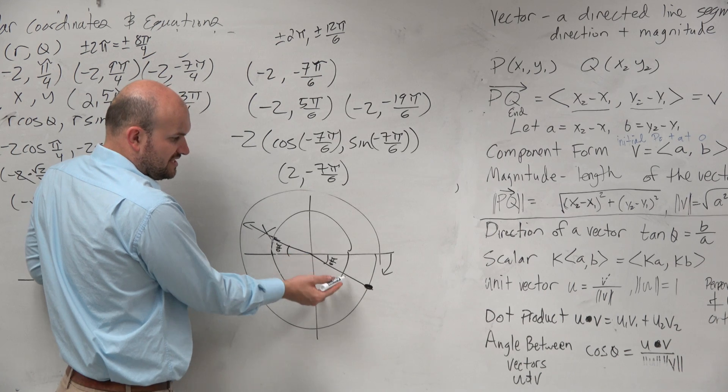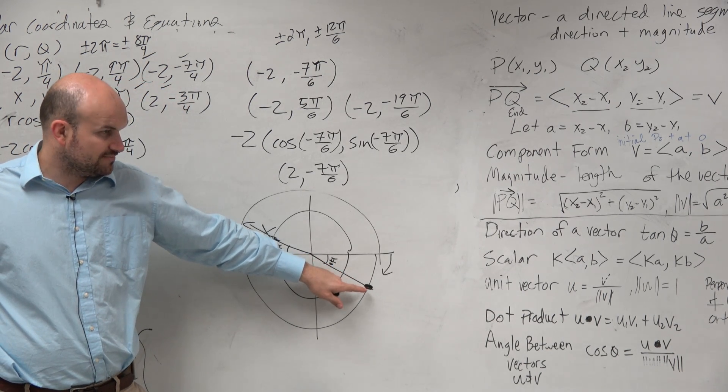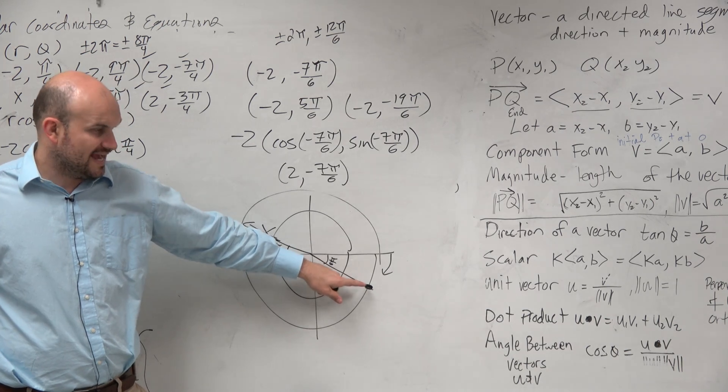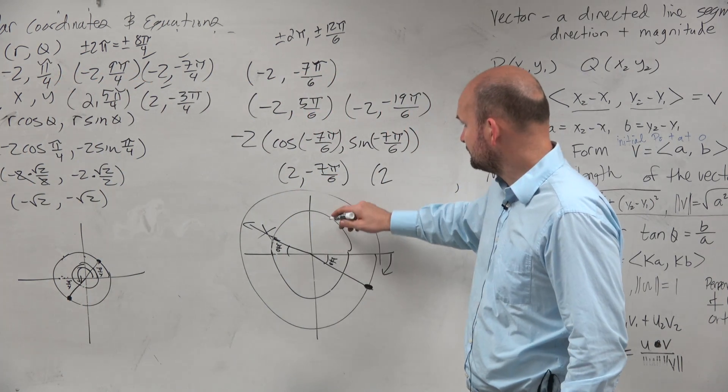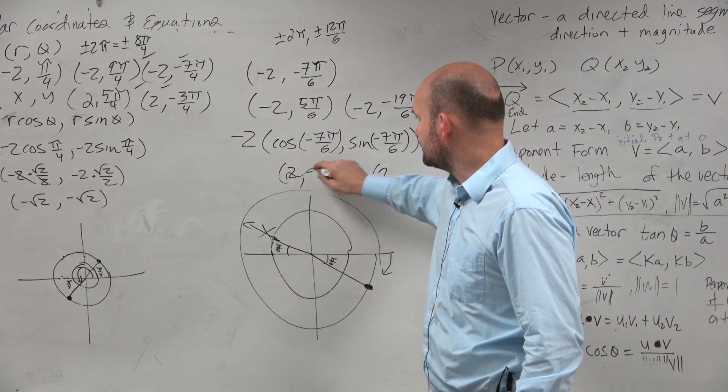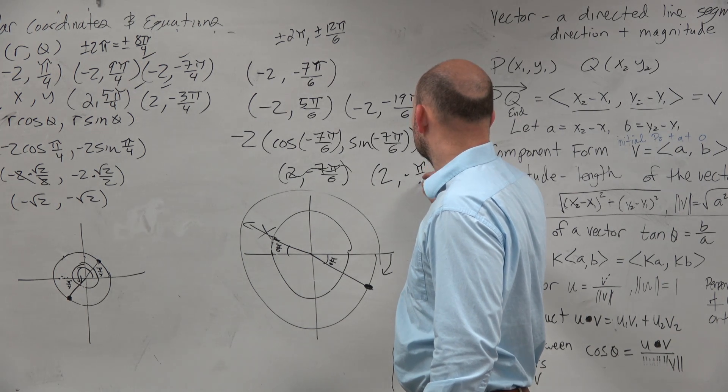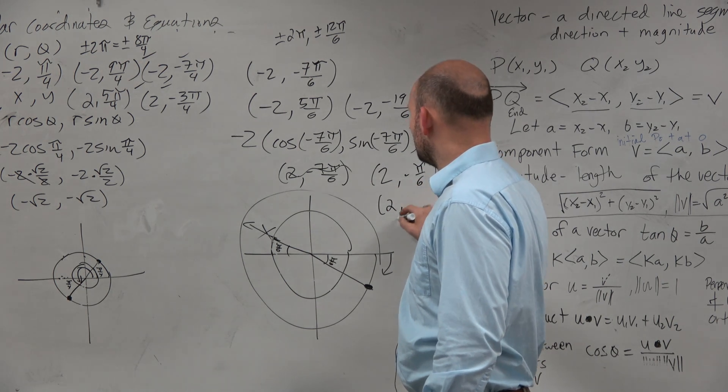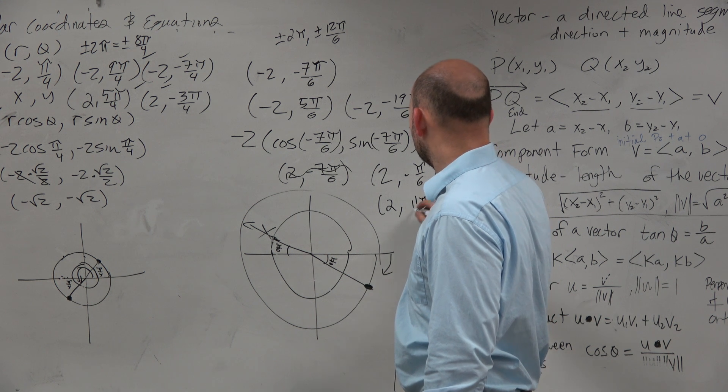You know the reference angle. Well, let's figure out, let's find this point based on the radius and the angle. Well, I could do 2 comma, so I don't want to use this thing, but that's not a point. So I could do 2 comma negative π over 6. I could do 2 comma 11π over 6.